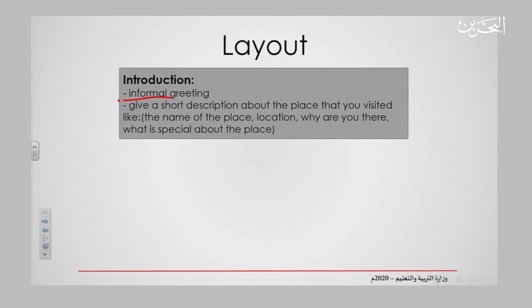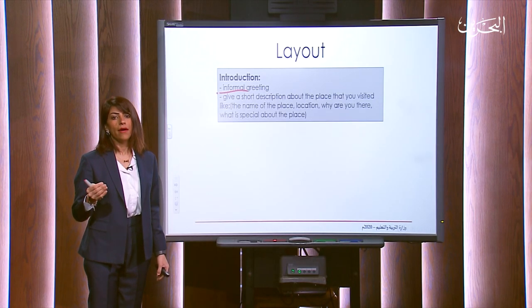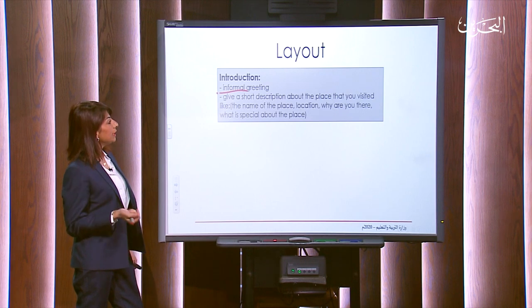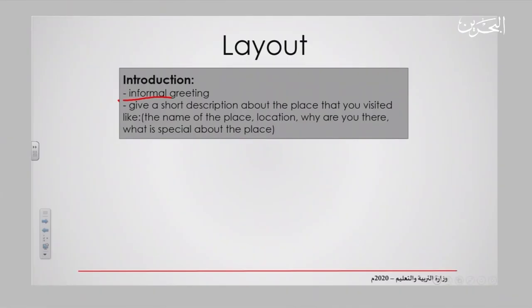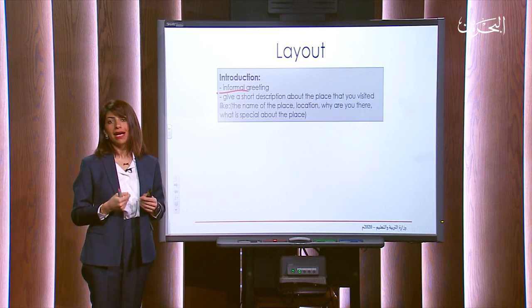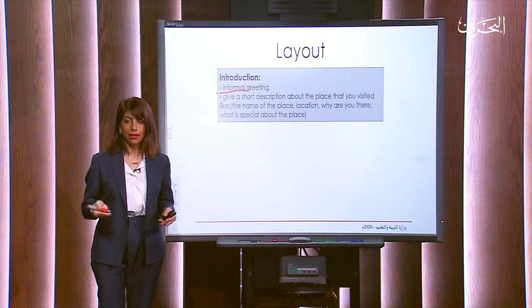Pay attention to the word informal — why is it informal? Because you're going to write it to a friend or your sister; it will not be sent to an official sector. Number two, you need to give a short description about the place you visited — the name of the place, the location, why you are there, whether it's a weekend trip or a business trip. Mention the purpose and say what is special about the place using a descriptive adjective, for example: it's wonderful, it's amazing.